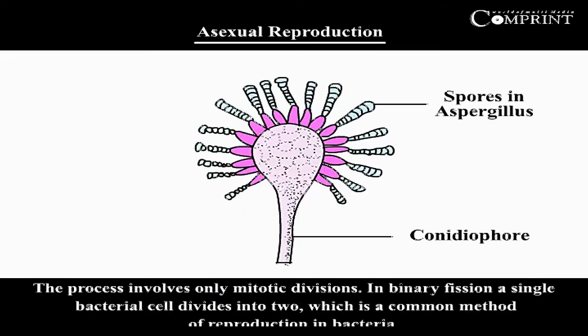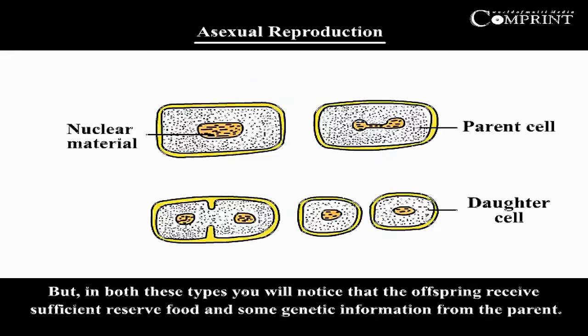The process involves only mitotic divisions. In binary fission, a single bacterial cell divides, which is a common method of reproduction in bacteria. But in both these types, you will notice that the offspring receives sufficient reserve food and the same genetic information from the parent.